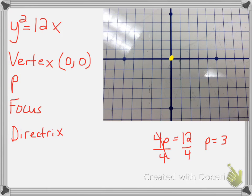Since x is not squared, the parabola opens to the right. So we go three spaces from the vertex to get the focus. If we go three spaces over, that's where your focus is, and that point is at (3, 0) — which is the same as adding h (which is 0) plus p (which is 3) to get 3.